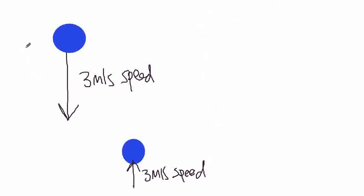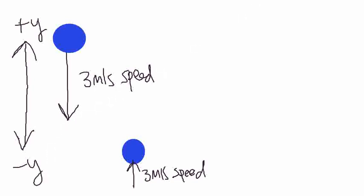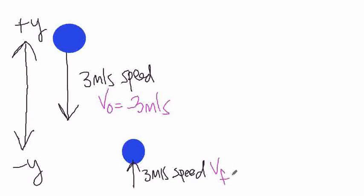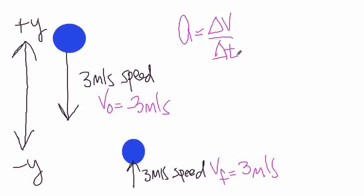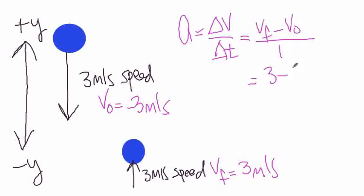Let's define up to be positive y and down to be negative y. The initial velocity — remember acceleration has to do with the change in velocity, not speed — the initial velocity is minus three meters per second. The final velocity is plus three meters per second. Acceleration is delta v over delta t. For a one-second interval: v_final minus v_initial over one gives three minus negative three over one, which equals six meters per second squared. We have an acceleration here because we changed the direction.